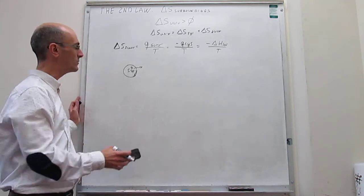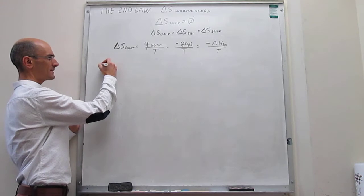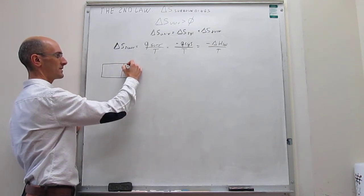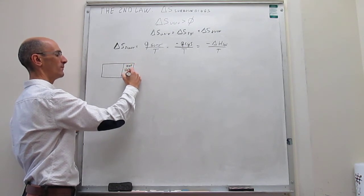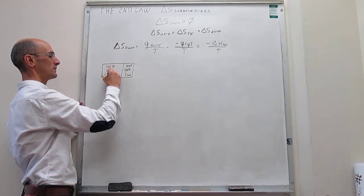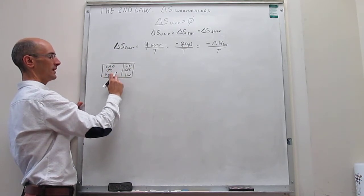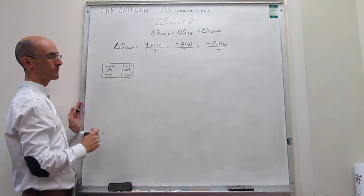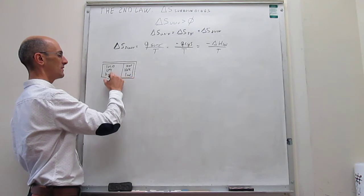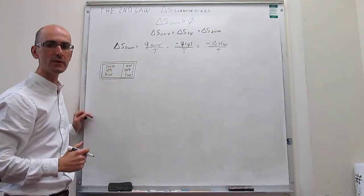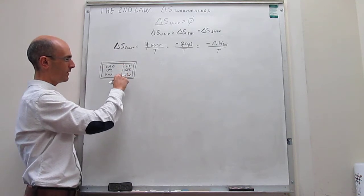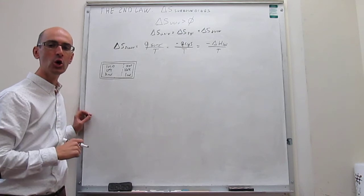To illustrate these concepts, we will apply them to a numerical example. Suppose we have a container in which we are mixing hot water and cold water. We have one mole of hot water at 100°C and three moles of cold water at 0°C, both liquid. This container is adiabatic, meaning it is insulated so that no energy escapes from the system into the surroundings. The goal is to predict whether mixing the hot and cold water will be spontaneous.